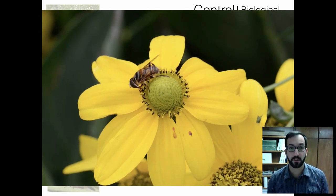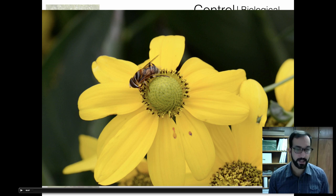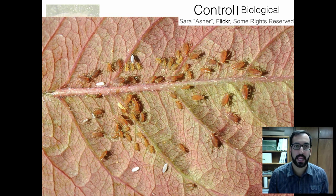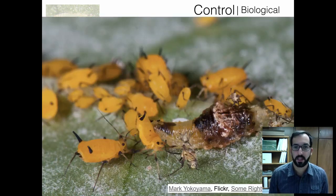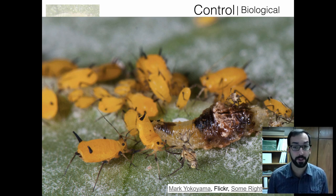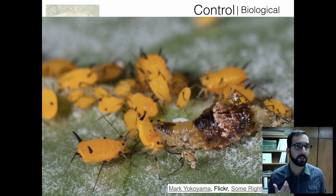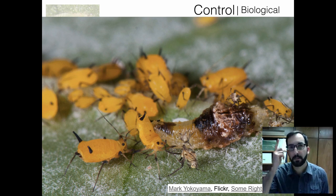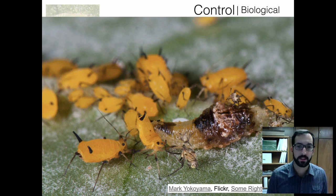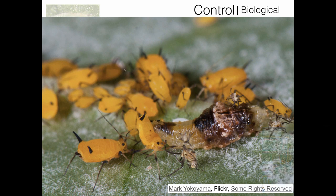Syrphid flies look a lot like bees but are actually a type of fly with no stinger, feeding on nectar and pollen with a sponging mouthpart. They lay eggs near soft-bodied insects, and those eggs hatch as larvae that feed on aphids. The larvae look a lot like bird droppings — this is thought to be a type of mimicry as a defense strategy, since predators are unlikely to eat something that looks like bird turd. If you grow milkweed for monarch butterflies, you may get bright orange milkweed aphids, and syrphid fly larvae will get on there and eat them up.